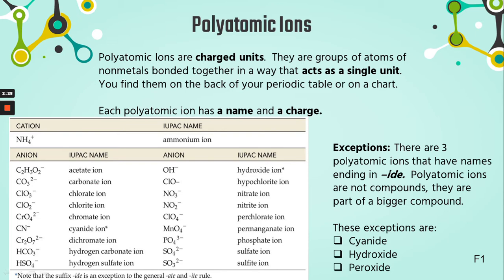Most of these end in something other than -IDE. You'll notice you've got nitrate and nitrite, sulfate, sulfite. Some of you asked about this last week — when are we going to use those names? Well, now we are. Most of these end in things that are not -IDE. IDE is usually the clue that it's just a regular old atom from the front of your periodic table. Of course, there are always exceptions — here are the three big ones. Cyanide ends in -IDE, so if you're looking on the front of your periodic table for an element called cyanide and you can't find it, flip it over.